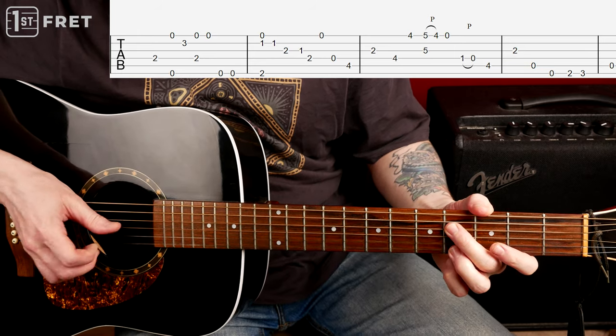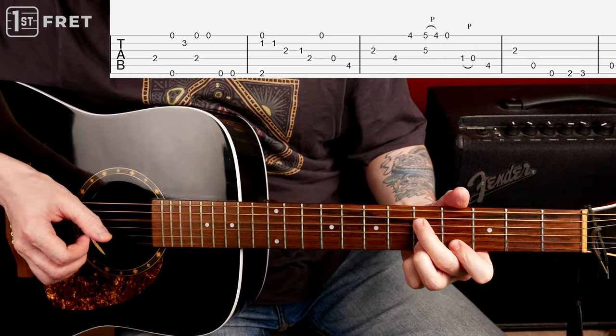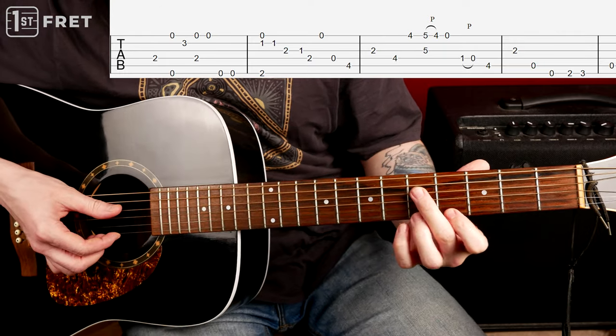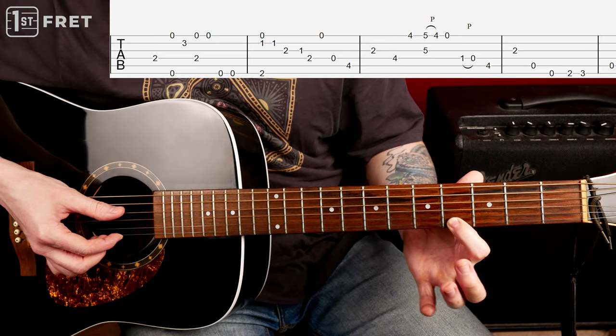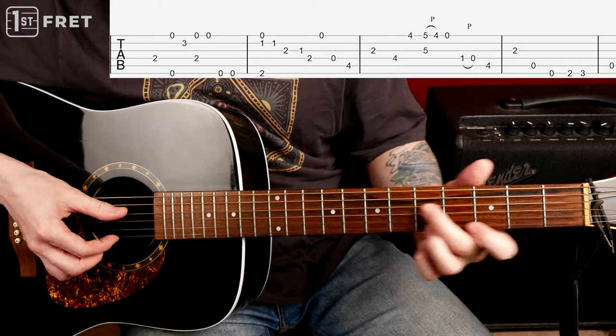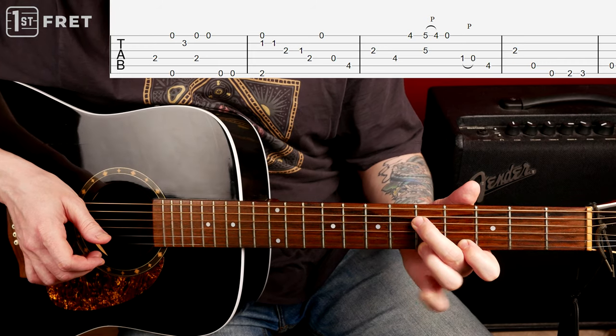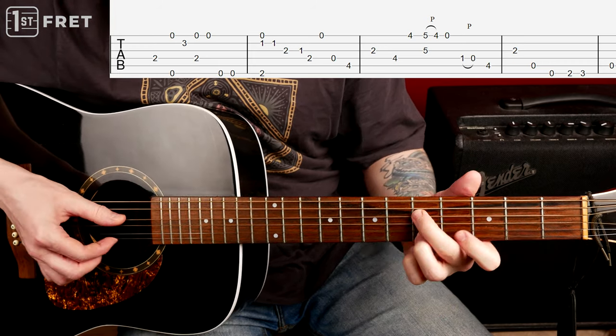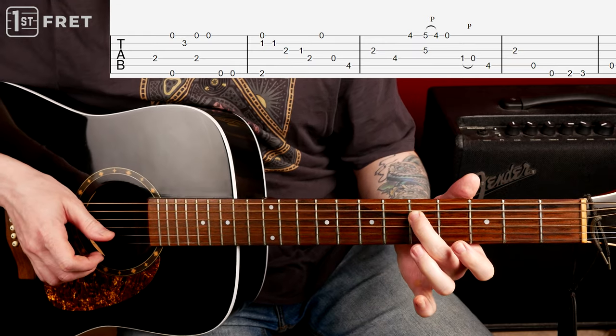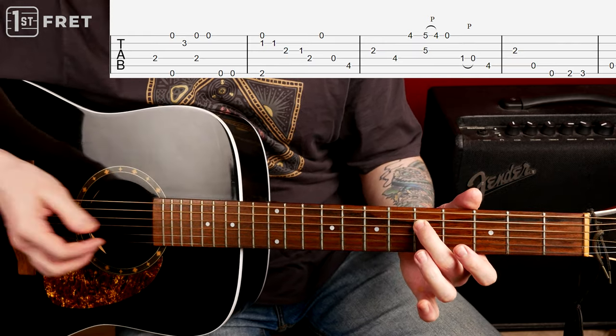2 and, and at the same moment you should fret fret 4 on the high E with your index finger like this, because then you have to do pull off here. And then lift your index finger and play high E string.